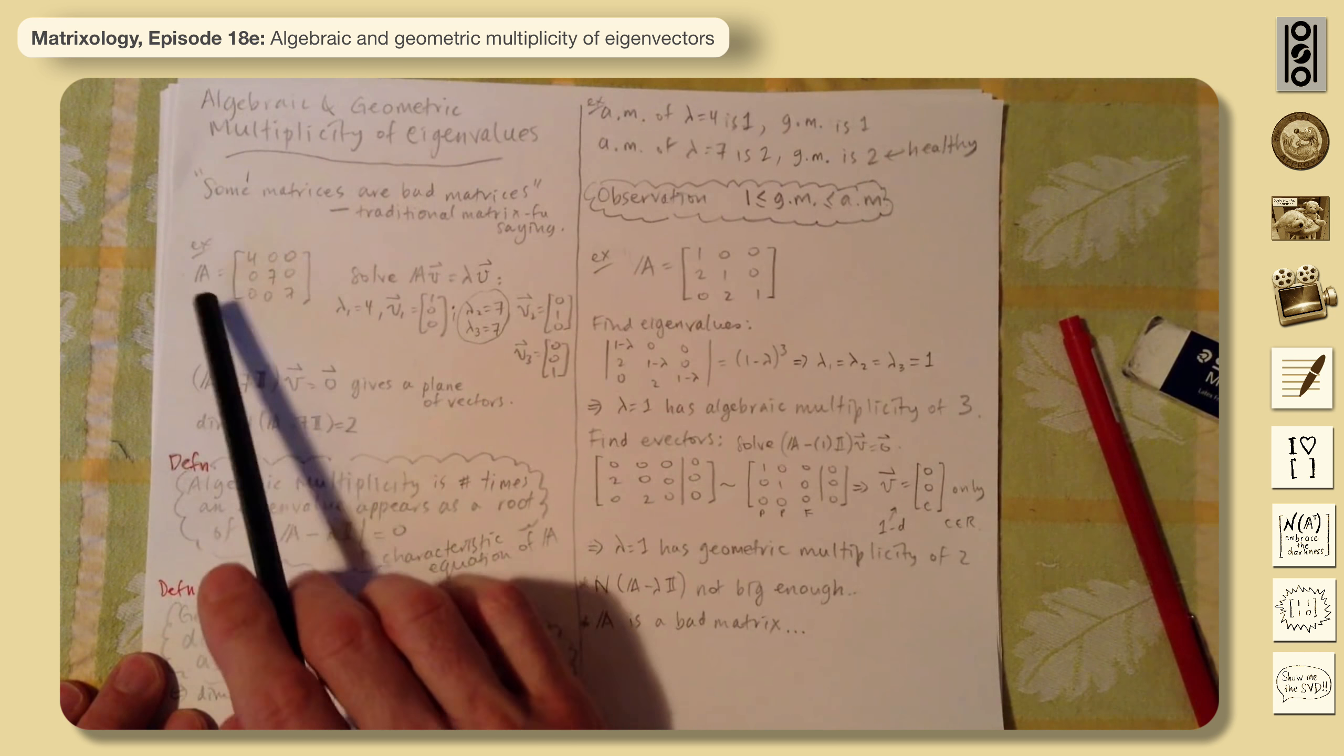And then we have these two 7s here. So the deal is when we go to solve for the eigenvectors, we've got 7 twice. 7 appeared twice in the characteristic equation. Let me put it here. So it would be 4 minus lambda, 7 minus lambda squared is how that would work out. Of course, 0.